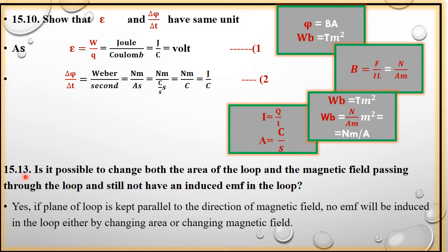Next question number 15.13: Is it possible to change both the area of the loop and the magnetic field passing through the loop and still not have an induced EMF in the loop? Keh raha hai ki kya aisa ho sakta hai ke hum area of the loop ko change karein ya magnetic field ko change karein jo loop mein se pass kar rahi hai, lekin EMF induced na ho. Aisa ho sakta hai.